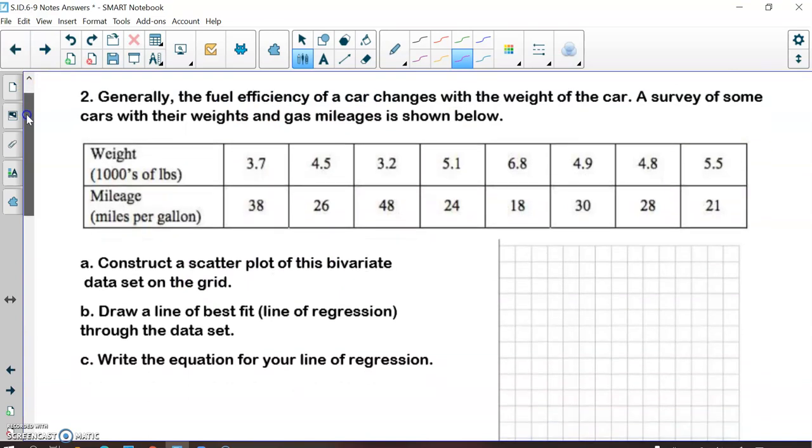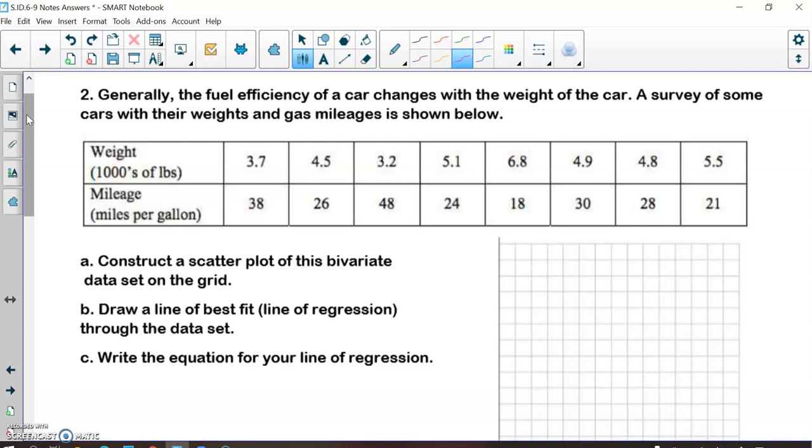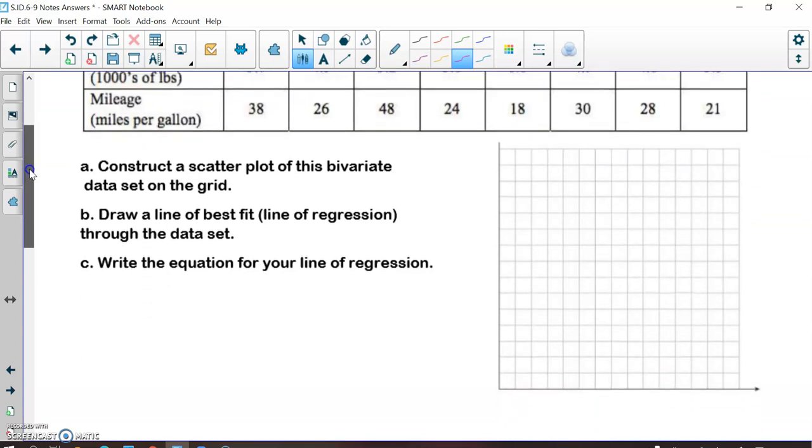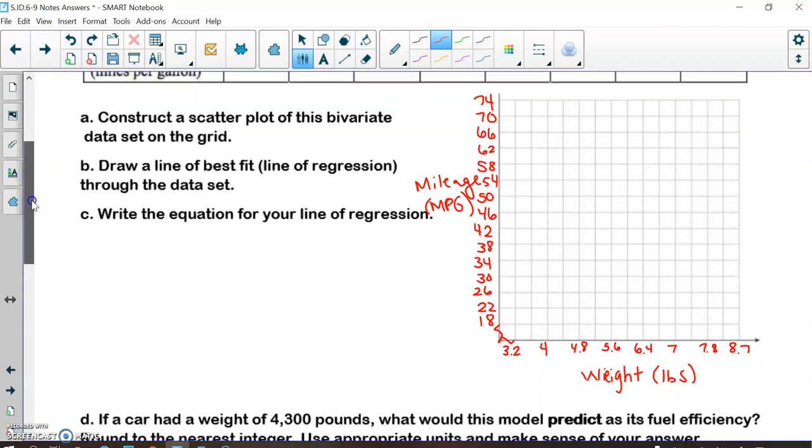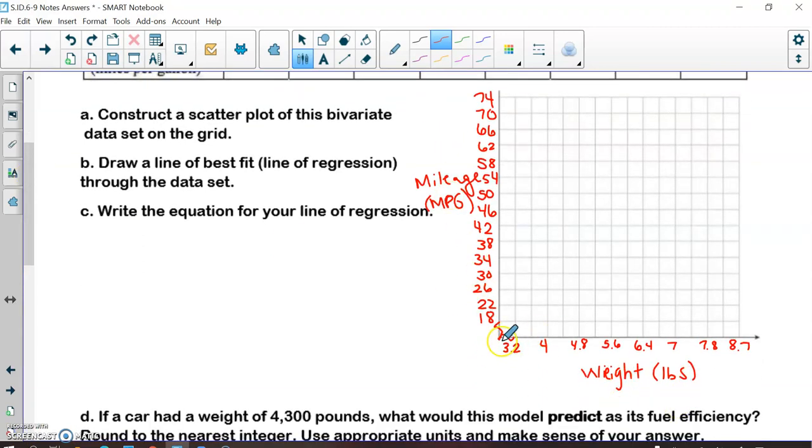Moving on to number two. Generally the fuel efficiency of a car changes with the weight of the car. A survey of some cars with their weights and gas mileages is shown below. Now the weight, this is in thousands of pounds. So a 3.7 would actually be 3,700 and so forth. And then here's the miles per gallon. Typically, if you have a car that weighs more, your miles per gallon is going to be a lot less. You're going to get less miles per gallon on your mileage. So now it says to construct a scatter plot with this data set. So we are going to need to label our X and Y axis and create a scale. So I went ahead and I labeled my X and Y axis and then I also skipped a bunch of values. I started my X axis at 3.2 and I went by 0.4. So the next one would be 3.6, then the next one's 4, then the next one's 4.4, then the next one's 4.8 and so forth. Then I started my Y axis at 18 and then I went by 4s all the way up.